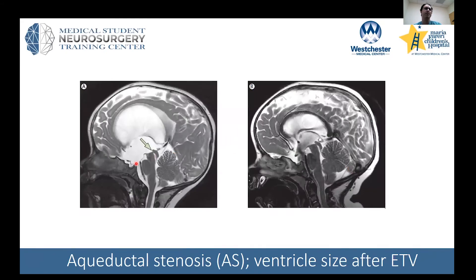Here is an example of a patient who had ETV for aqueductal stenosis and the ventricles came down afterward. However, that's not always the case. VP shunt is a much more effective way of decreasing ventricle size, whereas with ETV you don't always see such a dramatic decrease. Studies are still ongoing to determine if that difference has clinical significance.